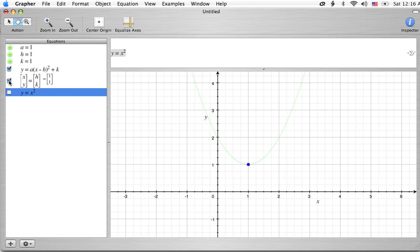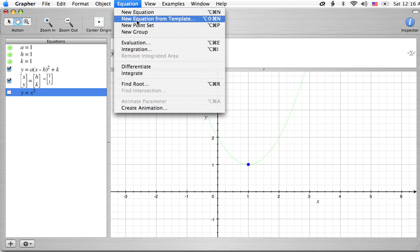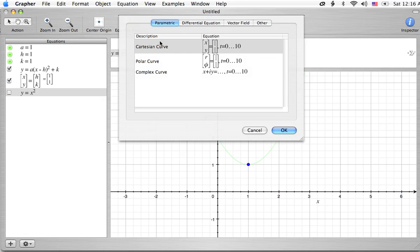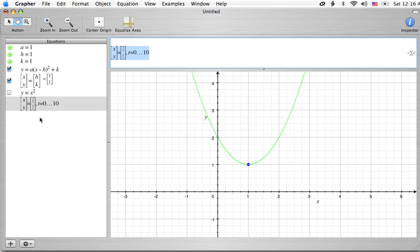Again our vertex is the point h, k. Remember this is a matrix that is normally, in this case, used from the parametric form of a Cartesian curve. We're getting rid of all this stuff and that gives us a point, so let's get rid of that.